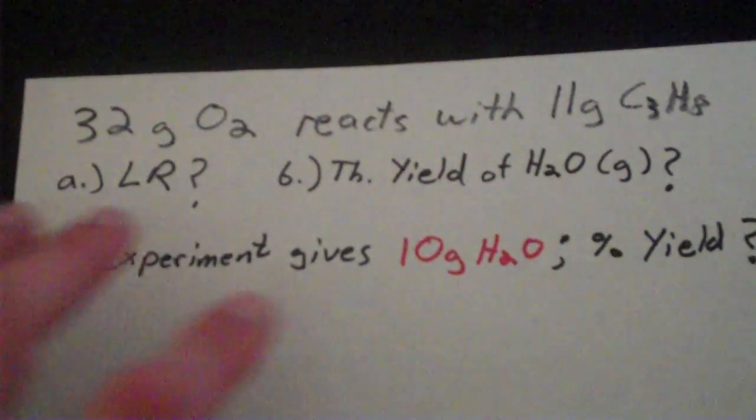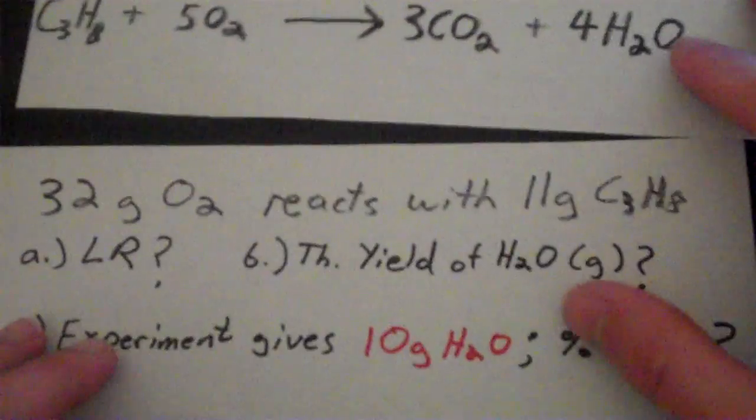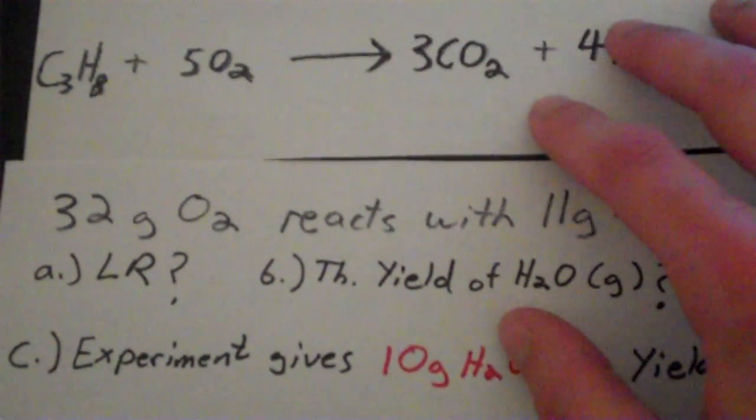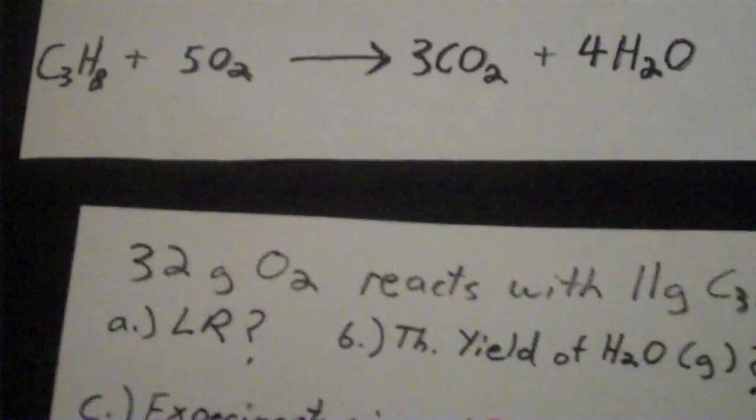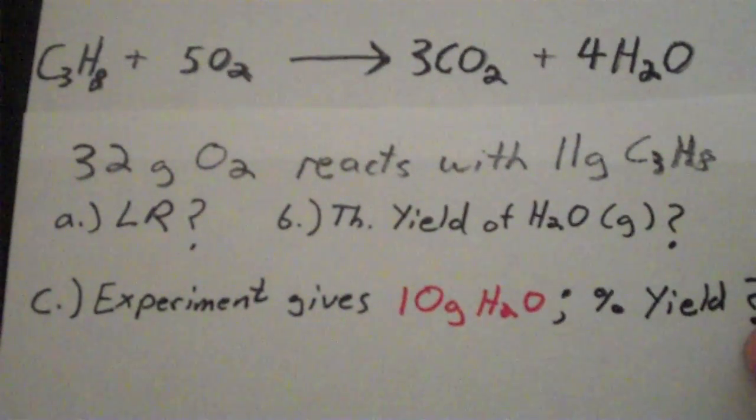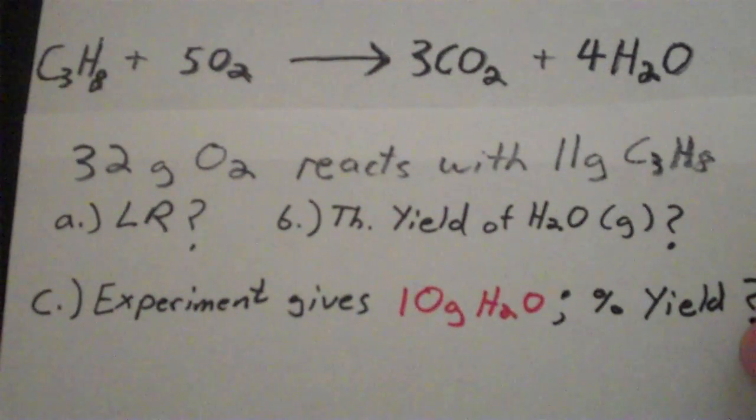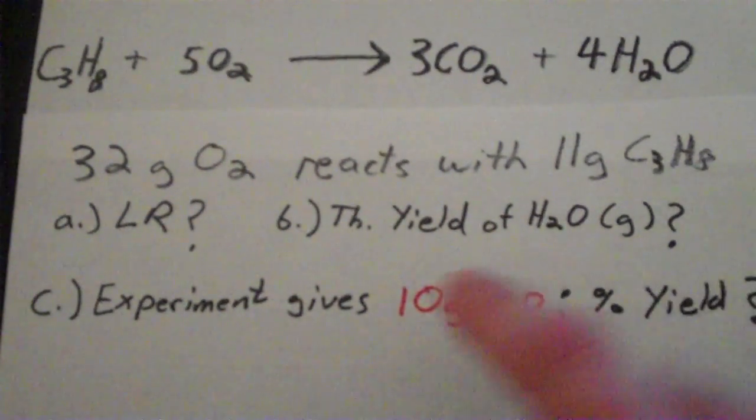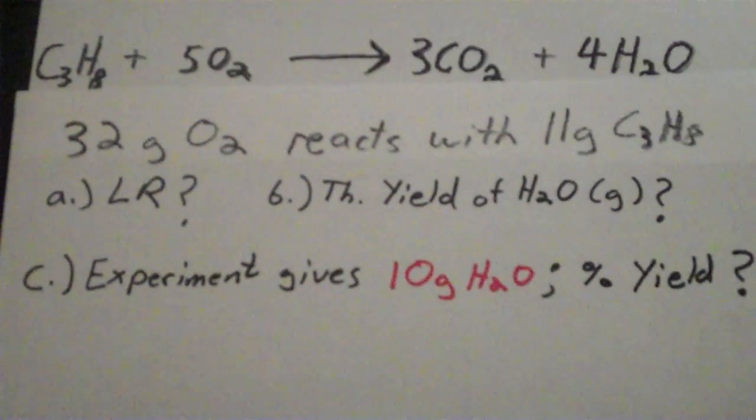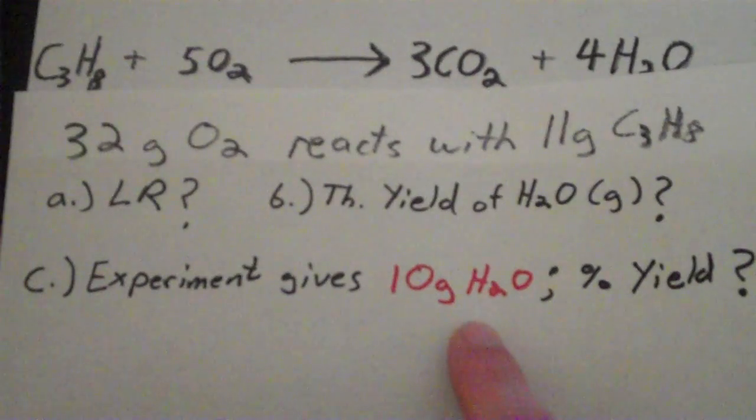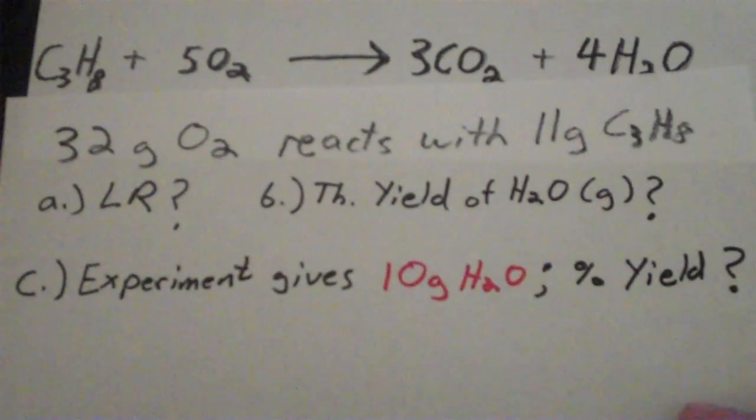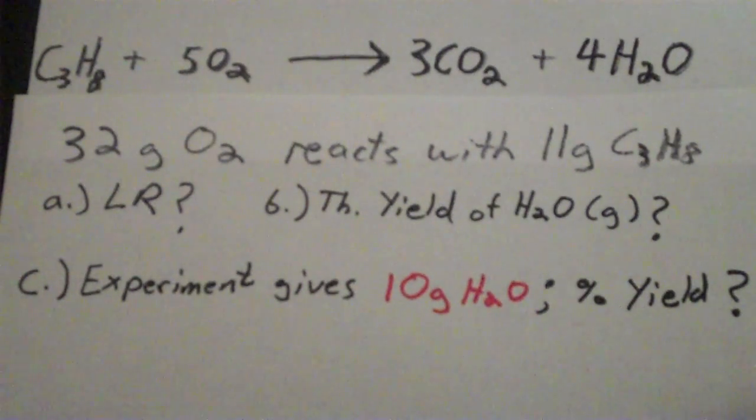So let's work on a problem that goes over the limiting reagent, theoretical yield, and percent yield. Suppose I have this reaction. This is the combustion of propane. I used it in my last video, so I'll do it again. It says that you have 30 grams of O2 oxygen that reacts with 11 grams of propane, C3H8. The questions are: what is the limiting reagent? What is the theoretical yield of H2O in grams? And if you carry out an experiment that gives 10 grams of H2O, what is the percent yield? This is a common type of problem that you'll probably see on an exam if you're taking general chemistry.